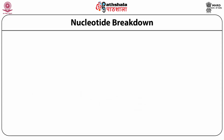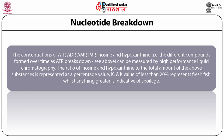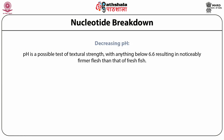Nucleotide breakdown: The concentration of ATP, ADP, AMP, IMP, inosine and hypoxanthine — the different compounds formed over time as ATP breaks down — can be measured by high performance liquid chromatography (HPLC). The ratio of inosine and hypoxanthine to the total amount of these substances is represented as a percentage value known as the K-value; less than 20% represents fresh fish, while anything greater is an indicator of spoilage.